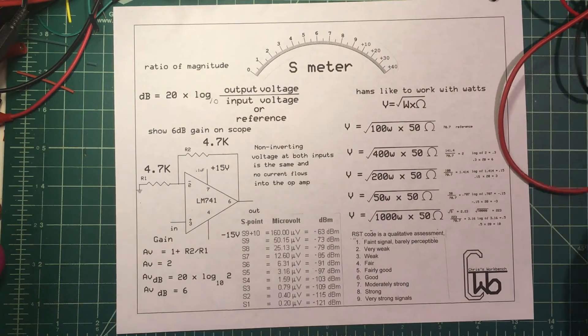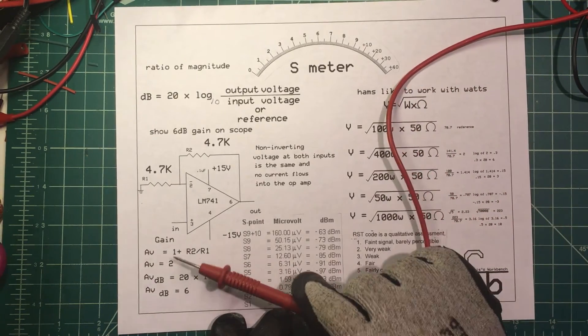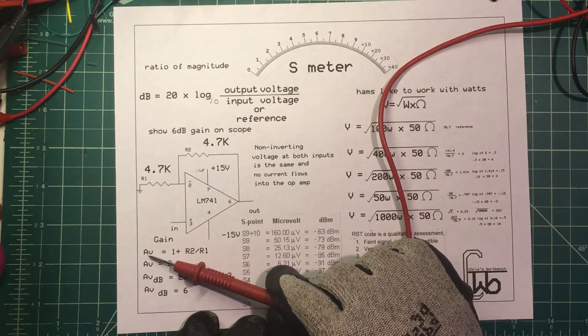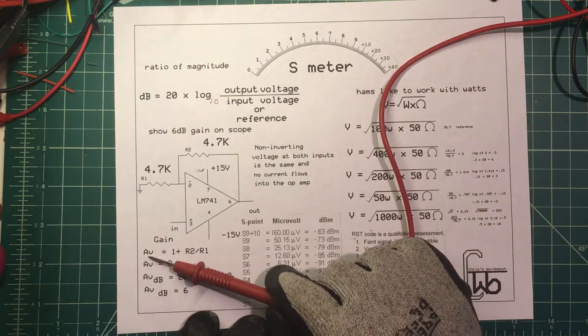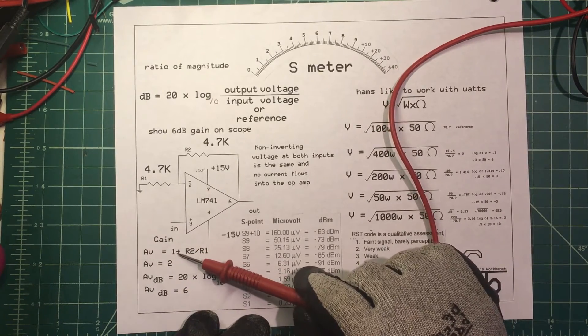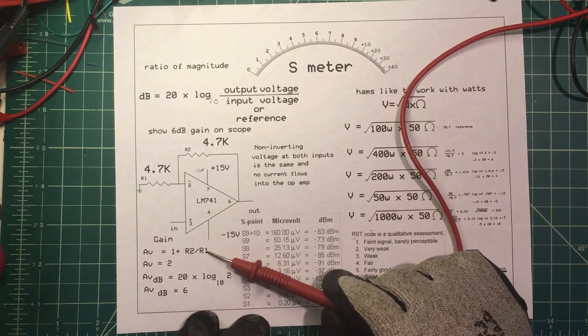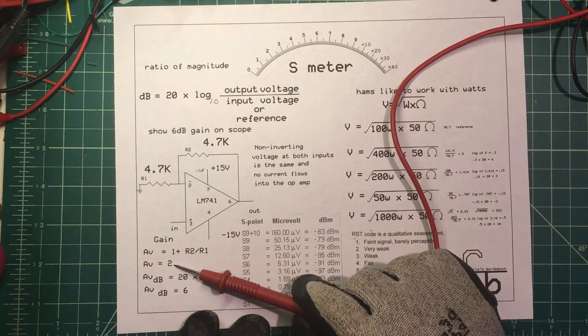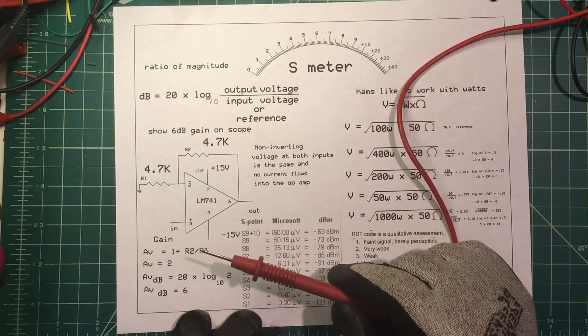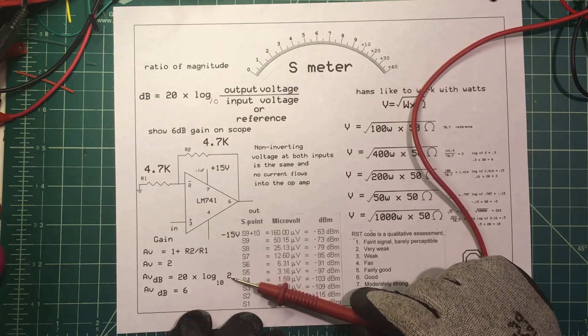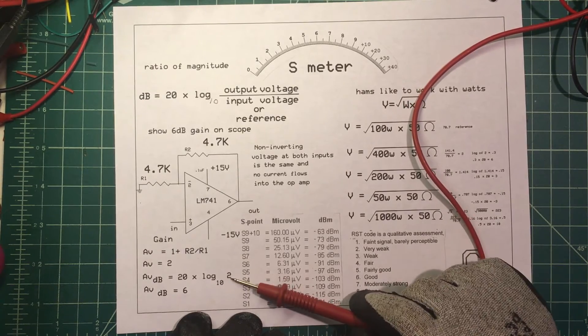The op-amp has a gain of two. And to get that we write the gain as Av, voltage of the amplifier, and that's equal to 1 plus R2 divided by R1, and that gives us a gain of two.